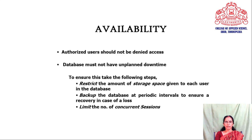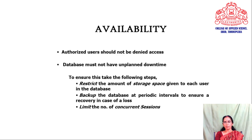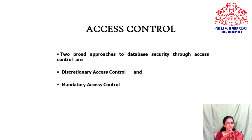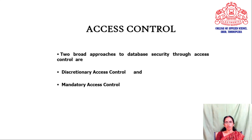The third objective is availability — an authorized user should not be denied access to data, meaning the database must not have unplanned downtime. To ensure this: restrict the amount of storage space given to each user; backup the database at periodic intervals to ensure recovery in case of loss or damage; limit the number of concurrent sessions on database access; and rely on operating system or underlying network security policies. In this session we focus on protecting the database using access control mechanisms.